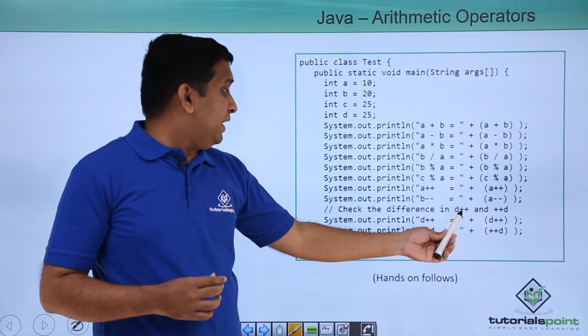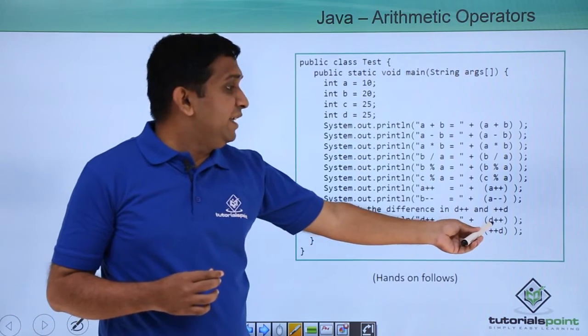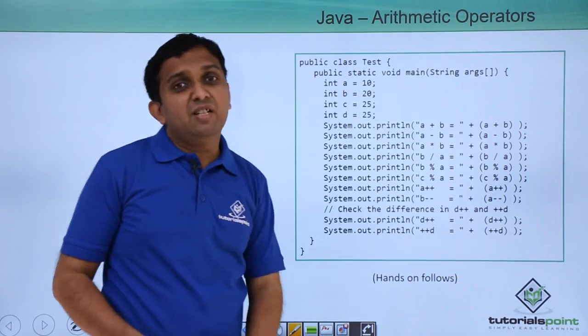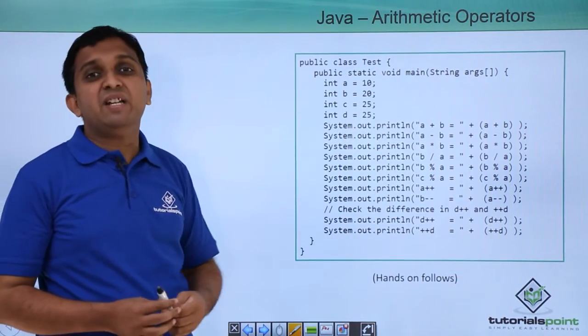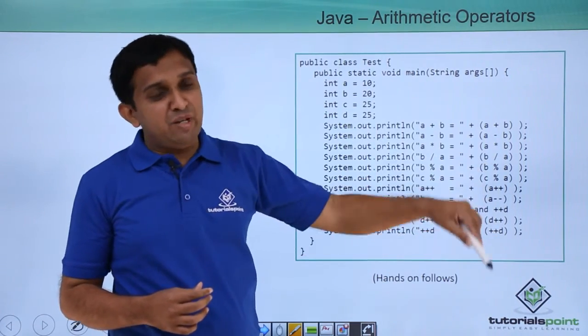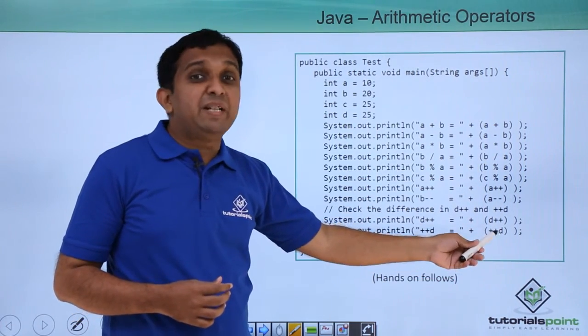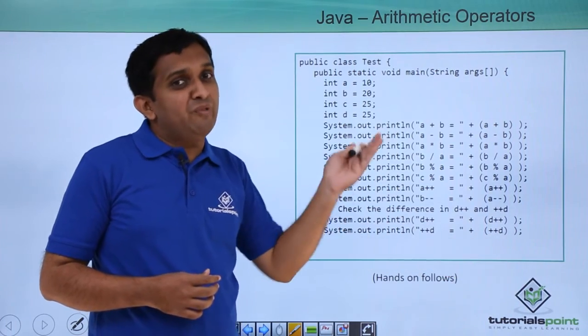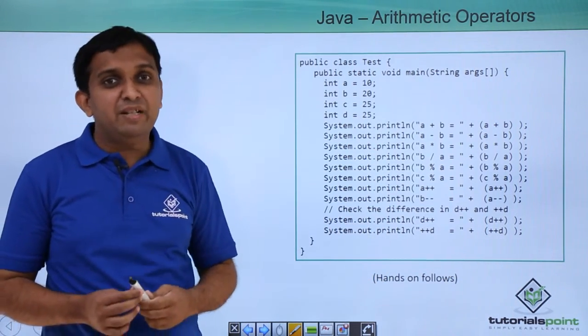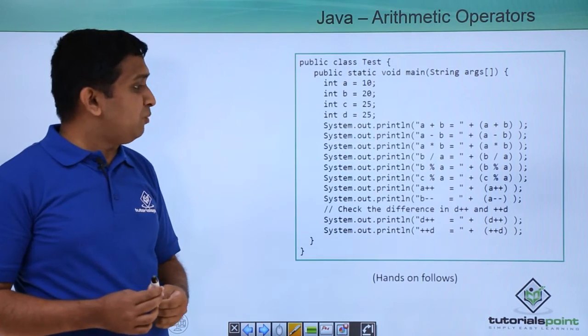Now in case of d variable, post-decrement, post-increment, and pre-increment. The value of d is 25. It will print that value and d will become 26. Again, pre-increment means from 26 it will increment to 27 and that value will be printed. So this will be the output of the program.